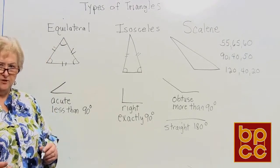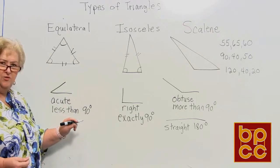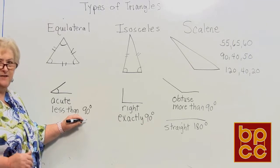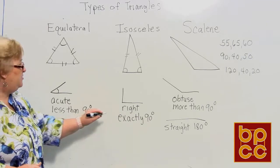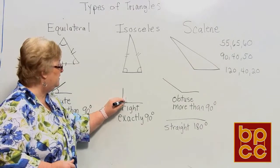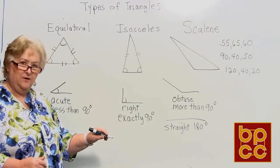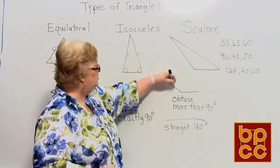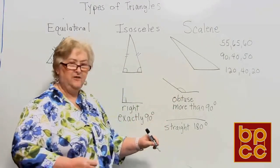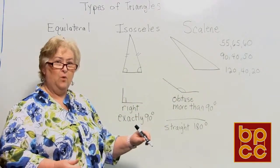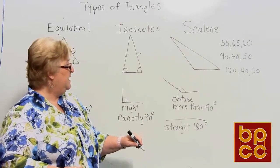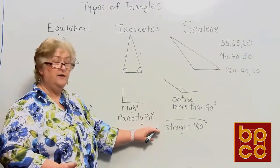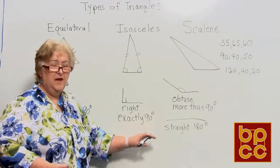Now let's talk about some angles. If you have an acute angle, that would be an angle that is less than 90 degrees. A right angle makes our little box — a right angle is exactly 90 degrees. An obtuse angle is anything beyond 90 degrees, more than 90 degrees.